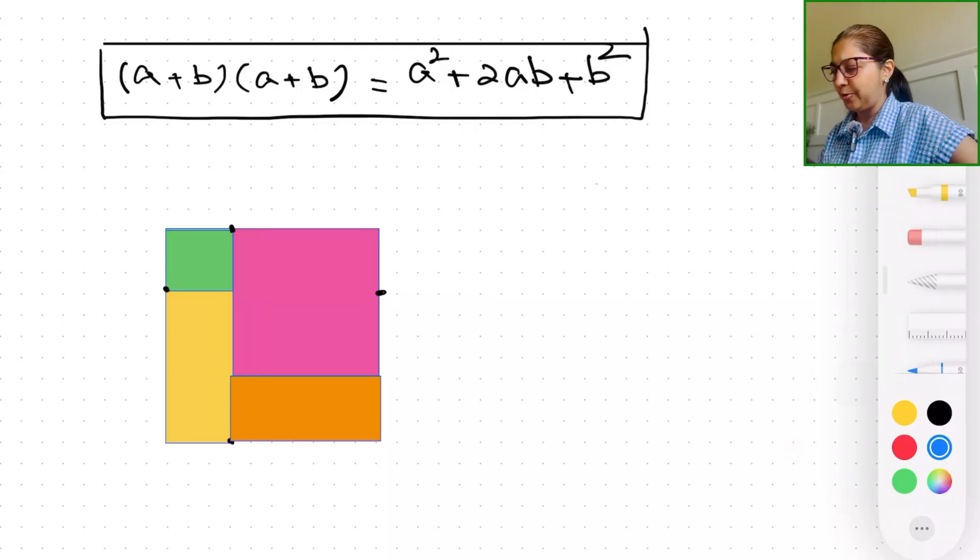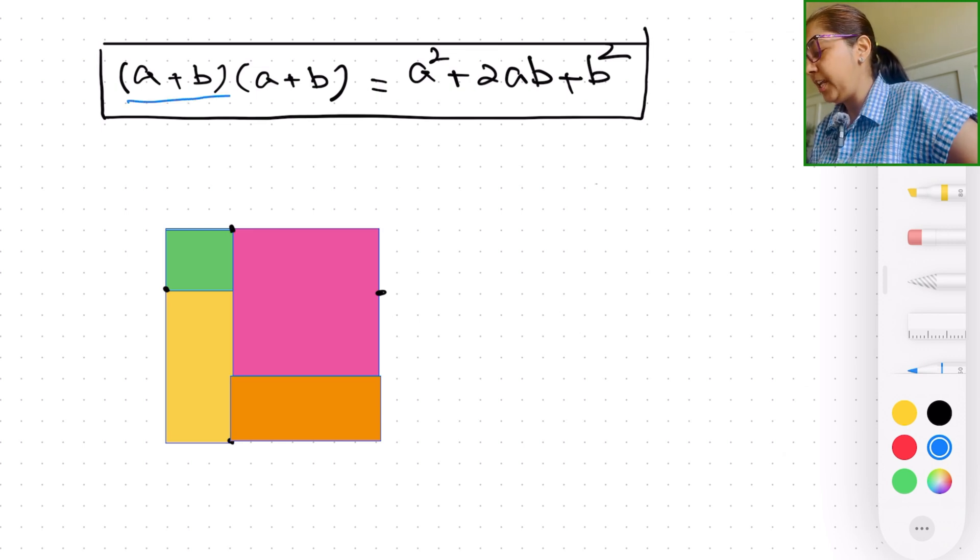Alright, see you around. Alright, let's get started with our visual proof. As you can see on the screen, I have written the formula for (a+b) times (a+b).